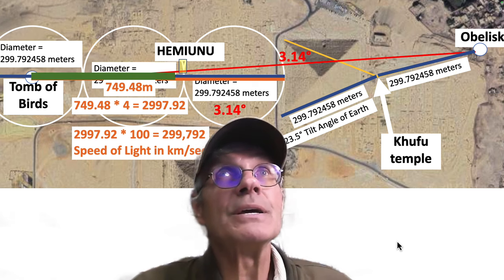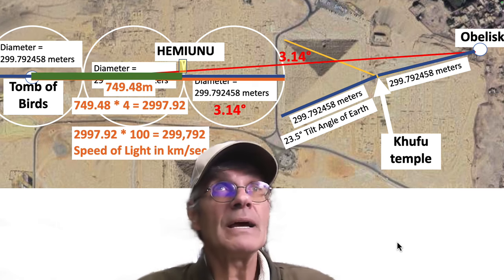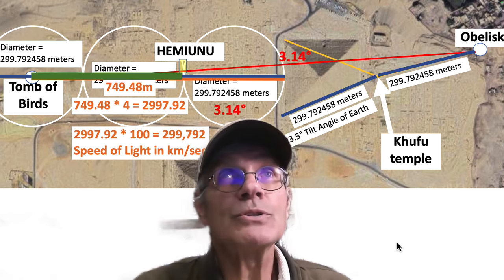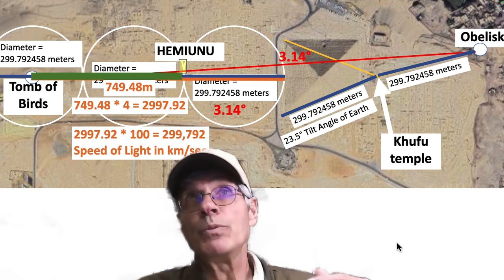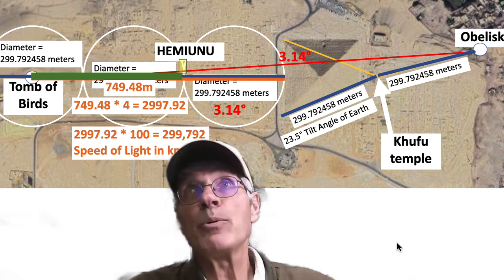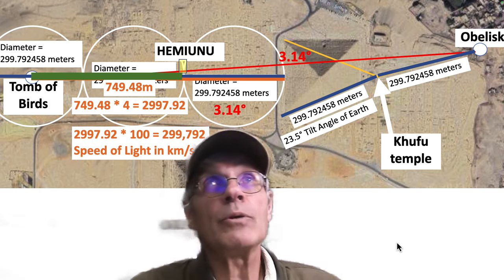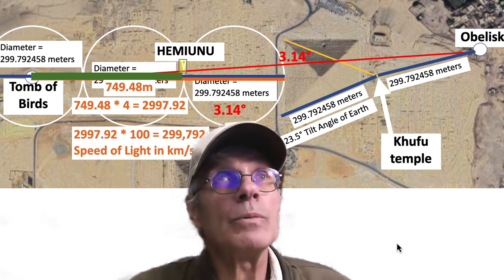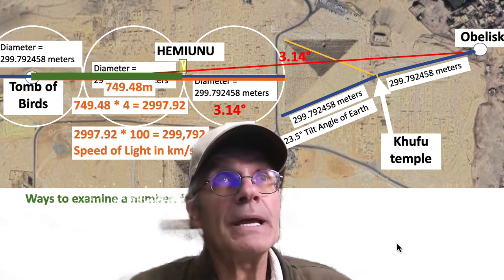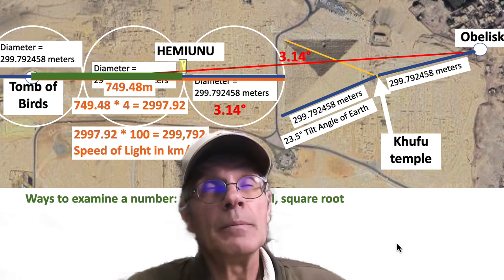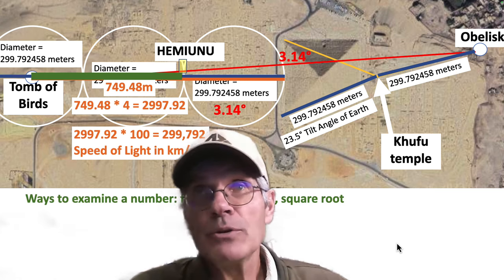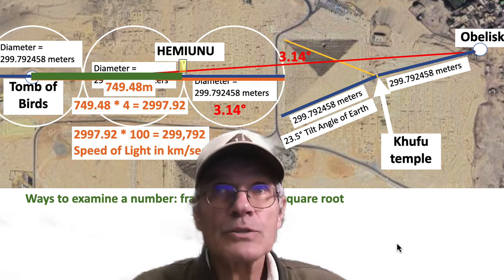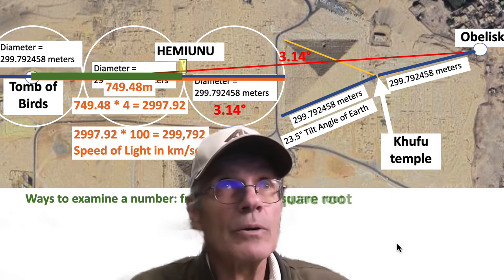But there's something else. If you take the line from the Tomb of the Birds to Hemiya's tomb, which is the phi proportion on the way to the Great Pyramid, it's 1 and 6.618. But there are other ways you can examine a number — use its fractal, look at its reciprocal, look at its square root. So let's look at the square root here.